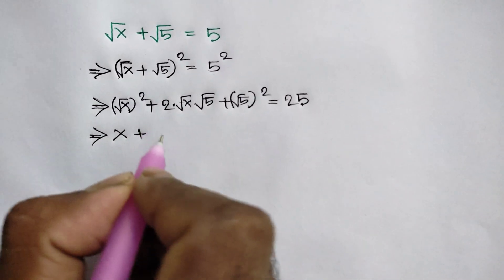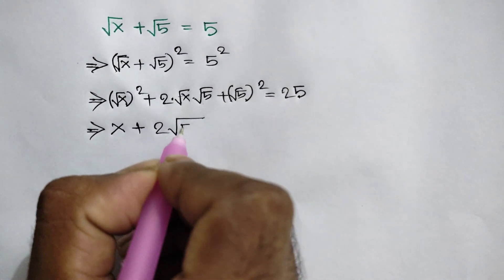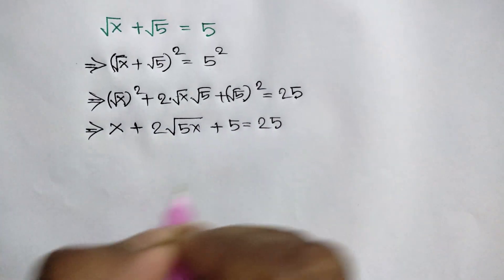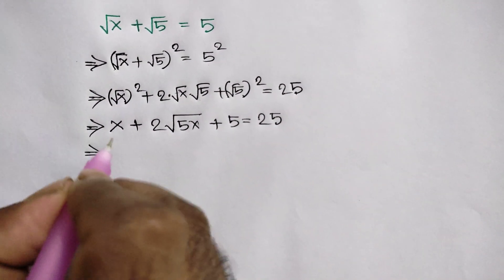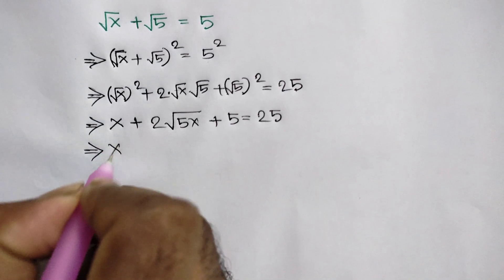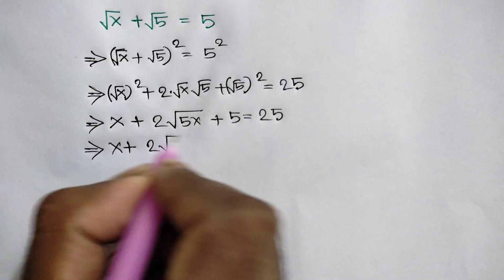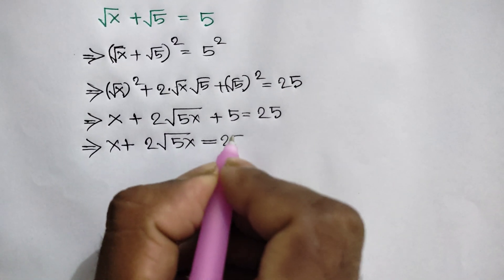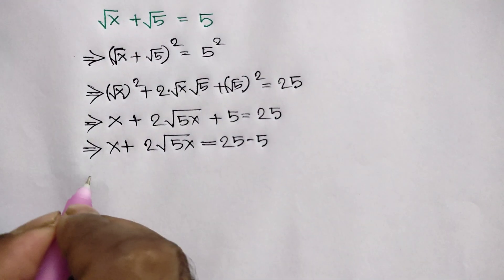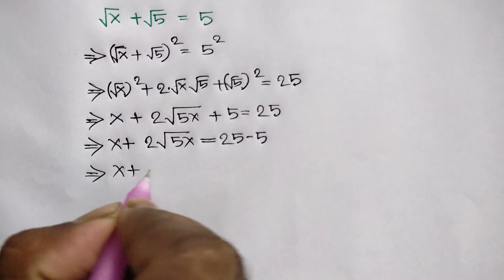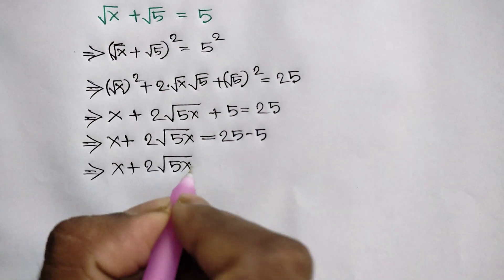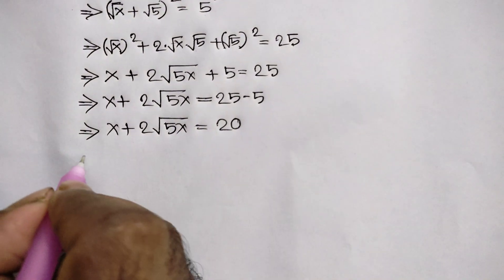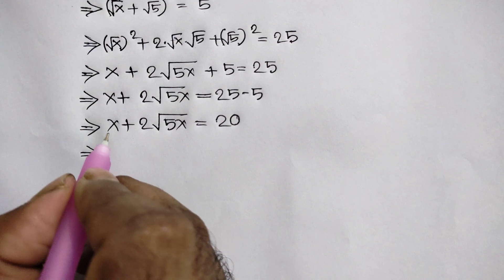Now this square can cancel this square root, so here we will get x plus 2 times square root of 5x, plus 5, is equal to 25. Taking this positive 5 to the right side, we will get 25 minus 5.